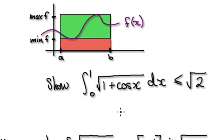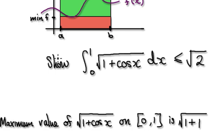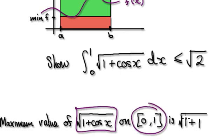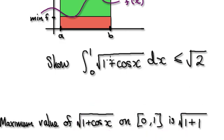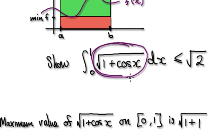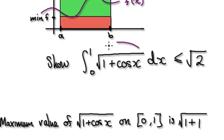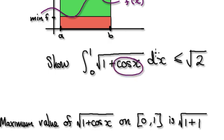So in order to show this, you have to say that the maximum value of this function on this interval is the square root of 2. This is your f of x — try to find the highest value that this thing can be. It's at its highest when cos of x is at its highest, meaning cos of x equals 1. So this must be true.